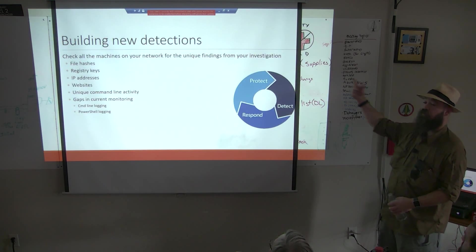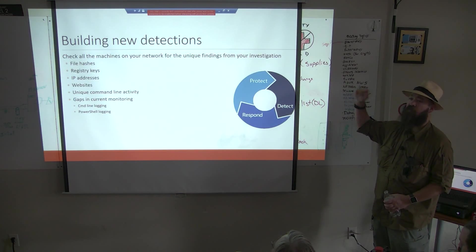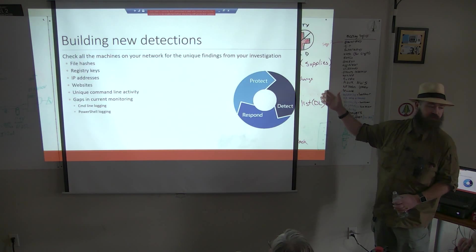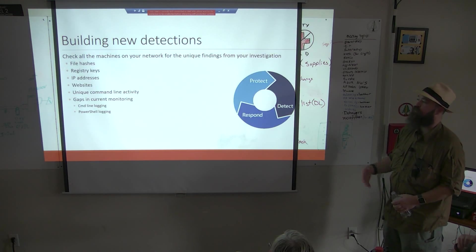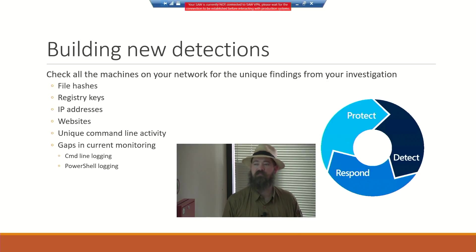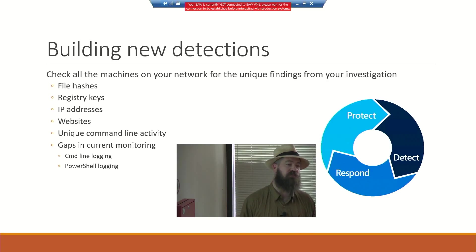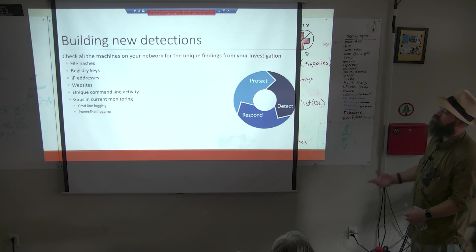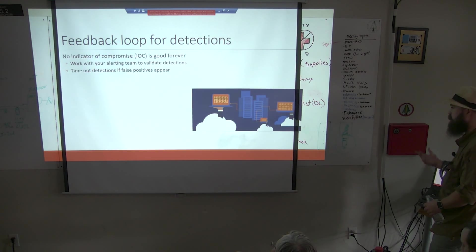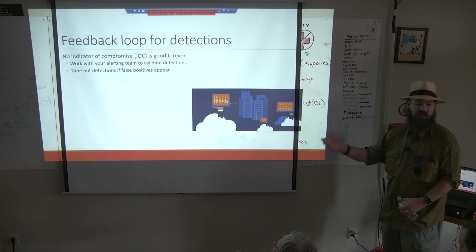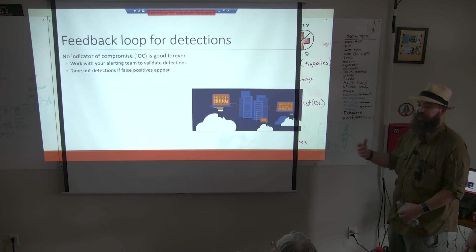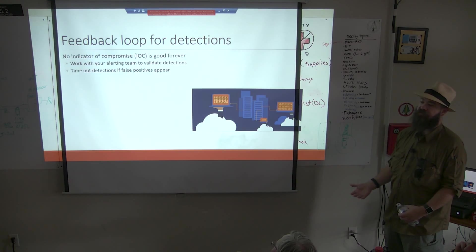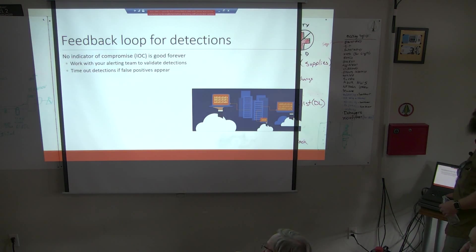Building new detections: if you've got command line logging with all the nasty stuff the attacker did, those can go into new rules and detections that will hopefully help you alert faster and find badness sooner. File hashes, registry keys, IP addresses — depending on what monitoring you have, these may or may not be valid for your environment. Gaps in incident monitoring: PowerShell logging is another big one. Feedback loop for detections — there's no perfect IOC that lasts forever. Work with your alerting team, validate detections going forward. Don't just set it and leave it. False positives will appear on some of these.